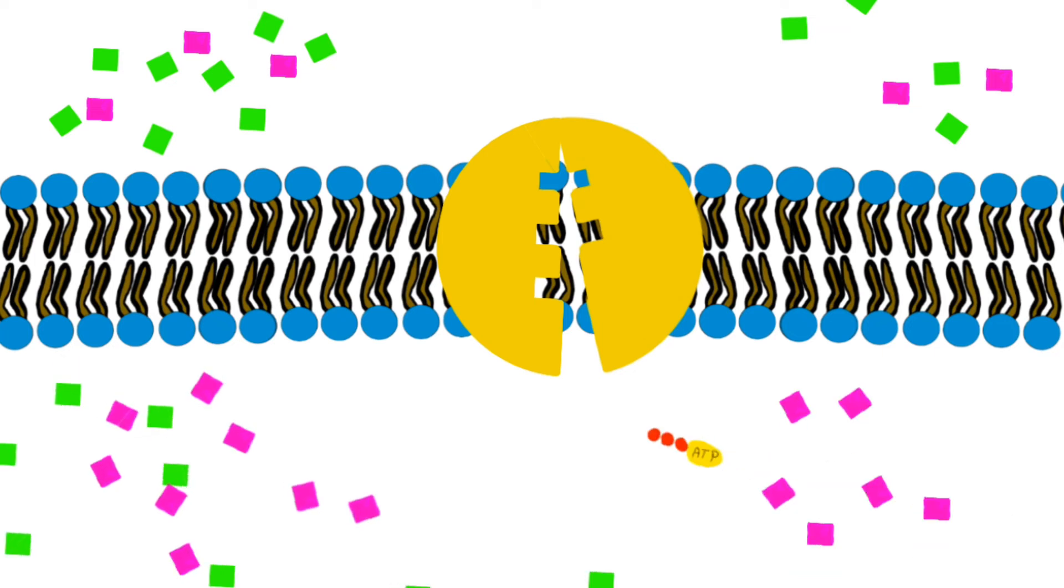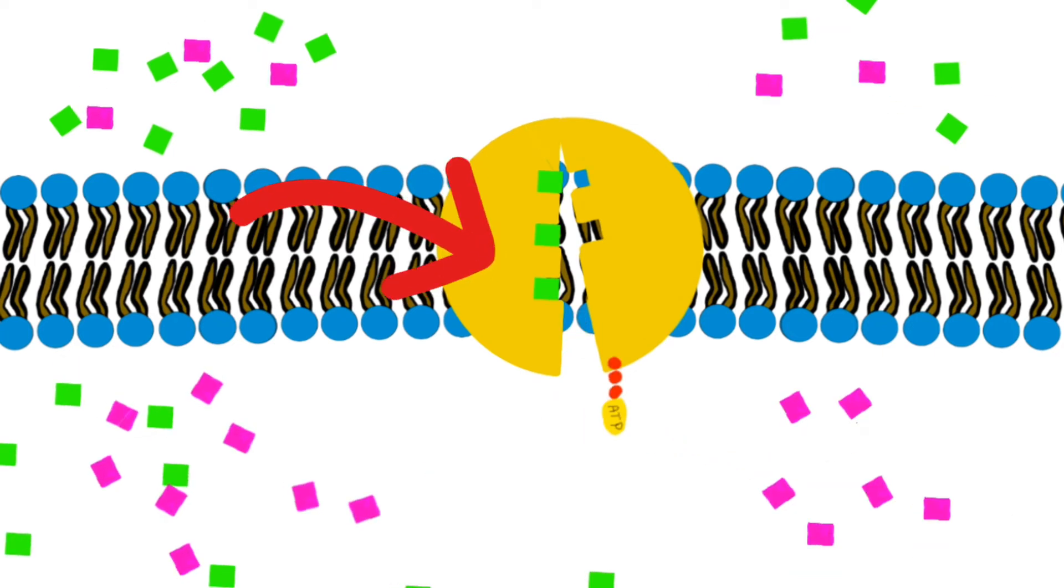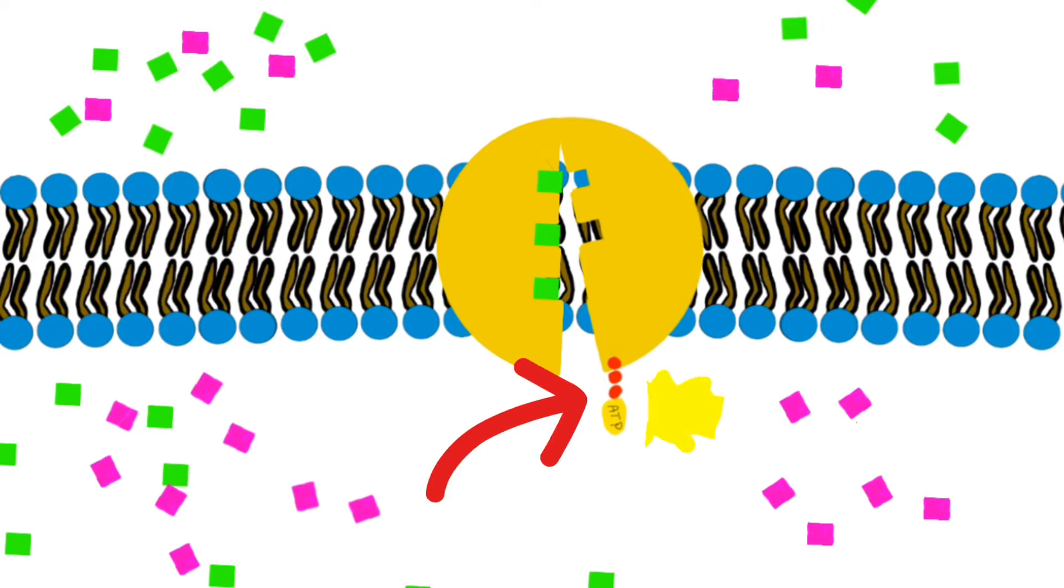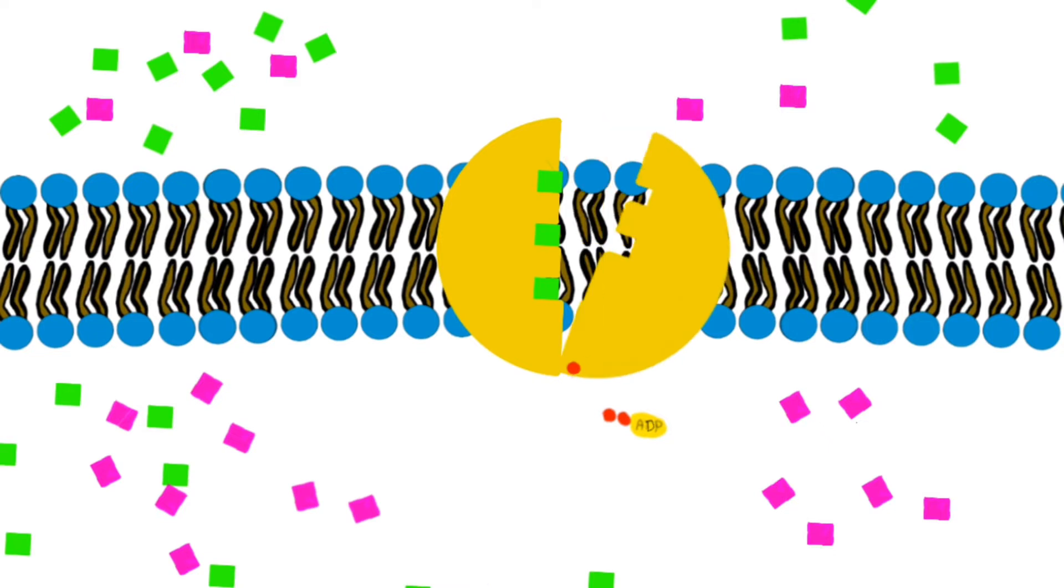First, three sodium ions, which are considered here the green squares, will bind to their location in the pump from the inside. Then, ATP hydrolysis to ADP occurs and the pump is now phosphorylated. After that, once the pump is phosphorylated, it will undergo a conformational change and will open on the other side, releasing the sodium ions outside of the cell.